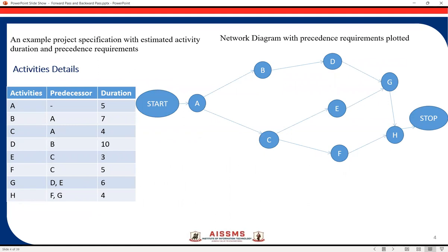Now we'll see how to calculate the early start and early finish for a specific example. Here on this slide, you can see a specific example. This is a table which contains the list of activities, the predecessors for those activities, and the duration for each activity. For this particular activity details, a network diagram is plotted. Now for this example, we'll carry out the forward pass.